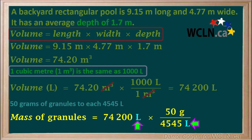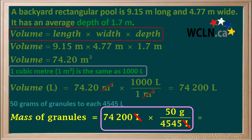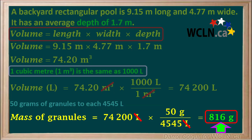This will work because we have the unit liters on top and on the bottom, and we can cancel these out, leaving us with the unit grams, which is the correct unit for mass. To get our final answer, we'll multiply 74,200 by 50 and divide by 4,545, which gives us 816 grams. So we know we need to add 816 grams of chlorine granules to our pool.